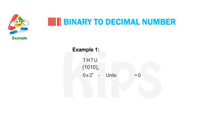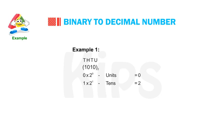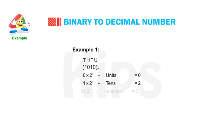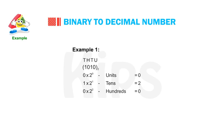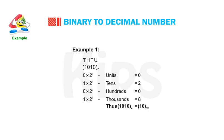Example 1: Convert 1010 in binary to decimal. In the units place we have 0, so 0 × 2⁰ = 0. In the tens place we have 1, so 1 × 2¹ = 2. In the hundreds place we have 0, so 0 × 2² = 0. In the thousands place we get 8. Adding these decimals we get 10. Thus 1010 in binary can be written as 10 in decimal.